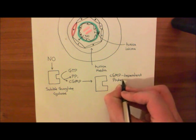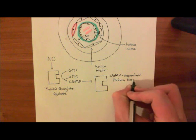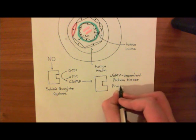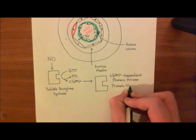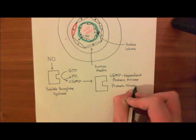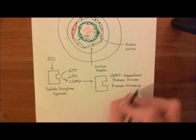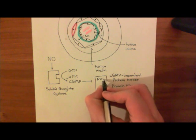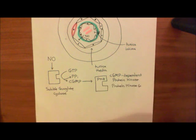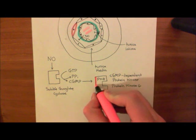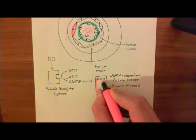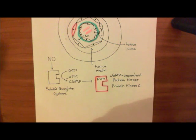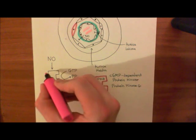This enzyme is cyclic GMP-dependent protein kinase — one name for it — another name, which is becoming more popular, is protein kinase G, often abbreviated to PKG. Protein kinase G then causes this smooth muscle cell to relax.